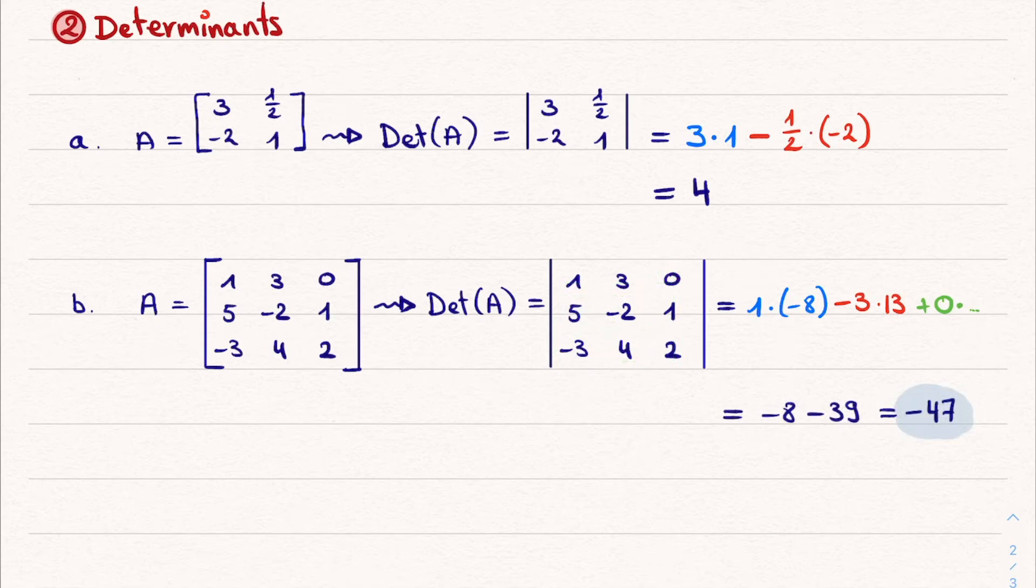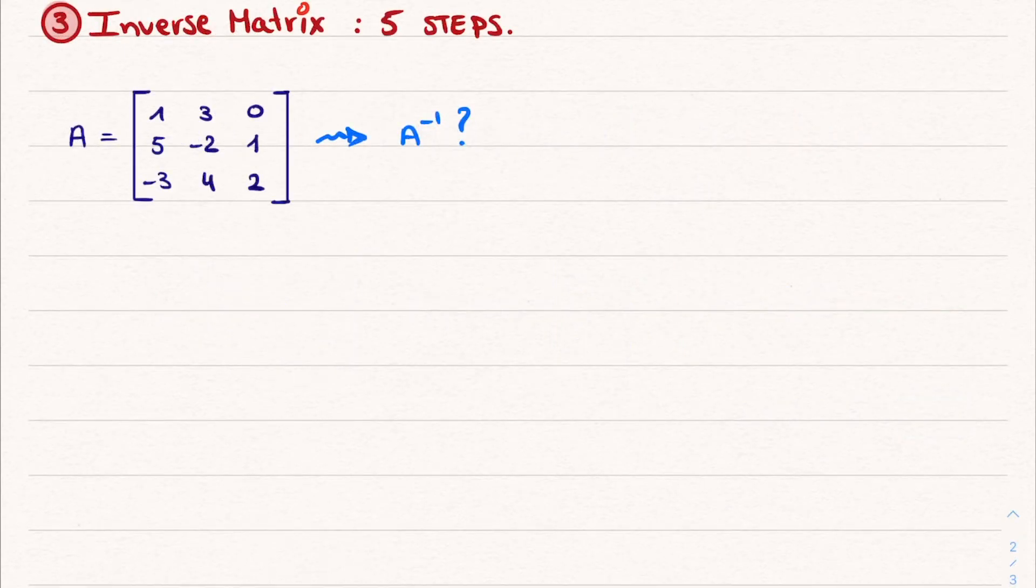The last topic is to calculate the inverse of a matrix, and this can be done in just 5 simple steps. Let's go through them for the same 3 by 3 matrix as before, to save us some time. Step 1 is to calculate the determinant. Now we've already done so in the previous part, it's minus 47.